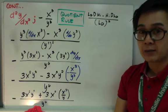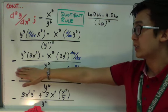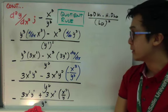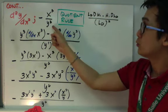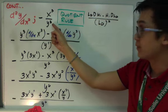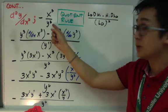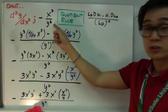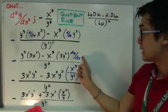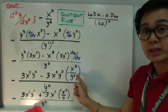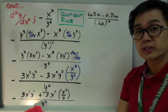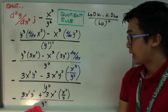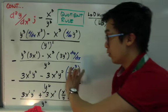Ito yung medyo unconventional doon sa ginagawa natin previously pagka hindi tayo gumagawa ng implicit differentiation. Before, yung second derivative pwede na to. Kaso kailangan natin i-isolate si dy/dx dito. So ang gagawin natin, meron tayong added step. Alam natin na yung dy/dx is equal to negative x³ all over y³ — ito yung first derivative natin. So ang pwede natin gawin using substitution is i-substitute yung value ng dy/dx using negative x³ all over y³. So i-replace natin ito.